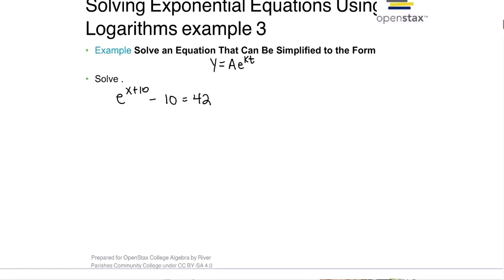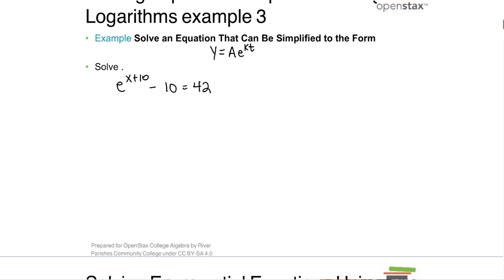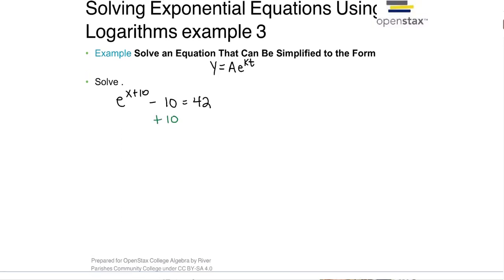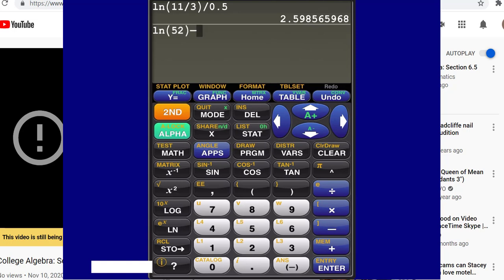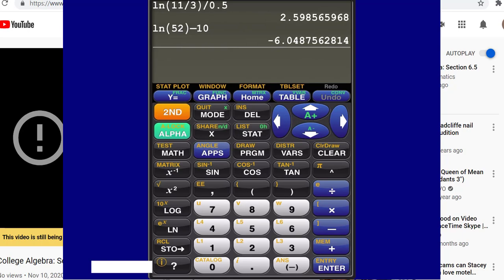Now solve an equation that can be simplified to this form. Notice this equation is not in that form yet because there's a minus 10 on the left. So what you want to do is get the e term by itself — I'm going to add 10 to both sides and I get e to the x plus 10 equals 52 because the 10s cancel. Once you get it to this form, then we take the natural log of both sides. On the left I end up with x plus 10 equals the natural log of 52. Then get rid of the 10 by subtracting 10 on both sides: x equals ln of 52 minus 10. In the calculator, do ln(52) minus 10 and we get negative 6.0488.